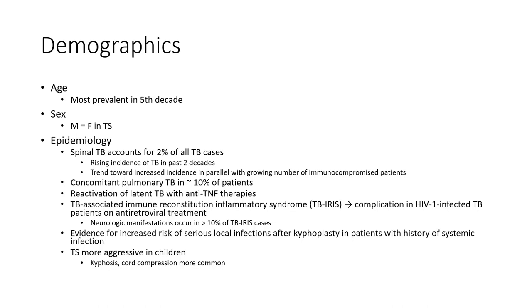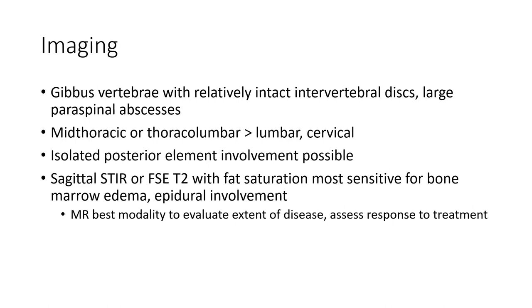More common imaging features include end-plate erosion of vertebrae with relative preservation of intervertebral disc space, and large paraspinal abscesses extending from mid-thoracic to thoracolumbar-lumbar-sacral regions. Isolated posterior element involvement is also possible. STIR or FSE T2 with fat saturation is the most sensitive sequence for bone marrow edema and early involvement.